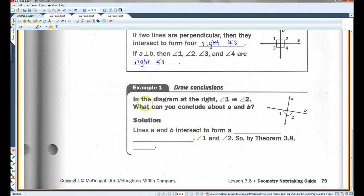For example, example 1. In the diagram at the right, angle 1 is congruent to angle 2. What can you conclude about A and B? Lines A and B intersect to form a linear pair of congruent angles, angle 1 and angle 2. So, by theorem 3.8, A is perpendicular to B.